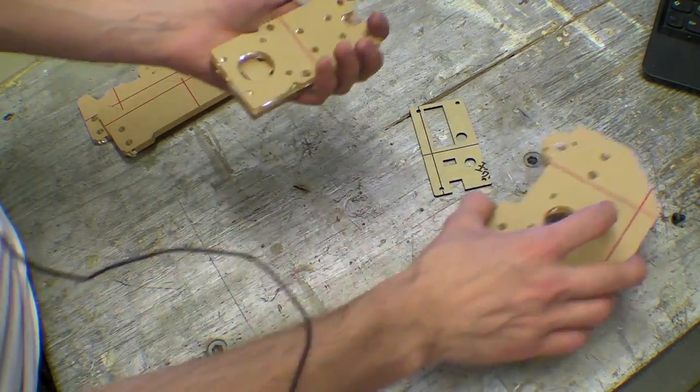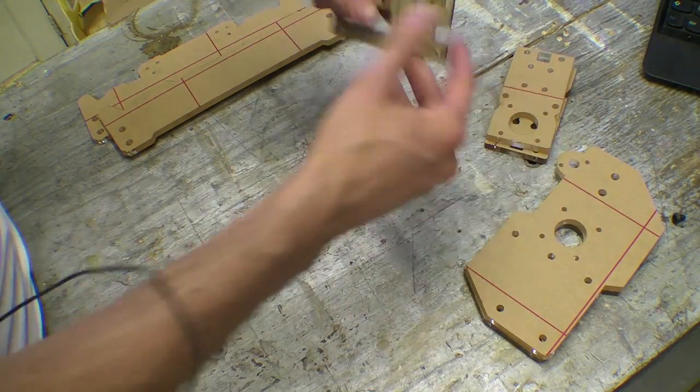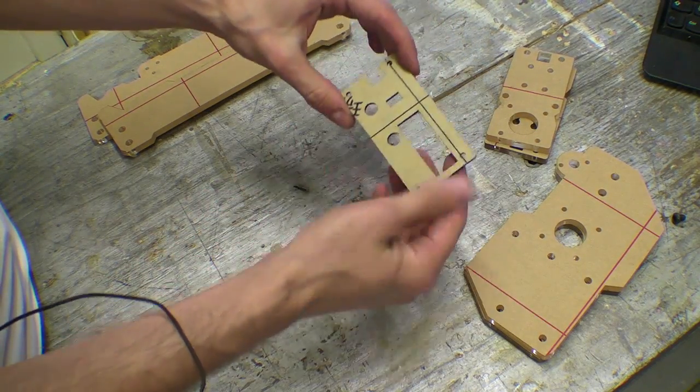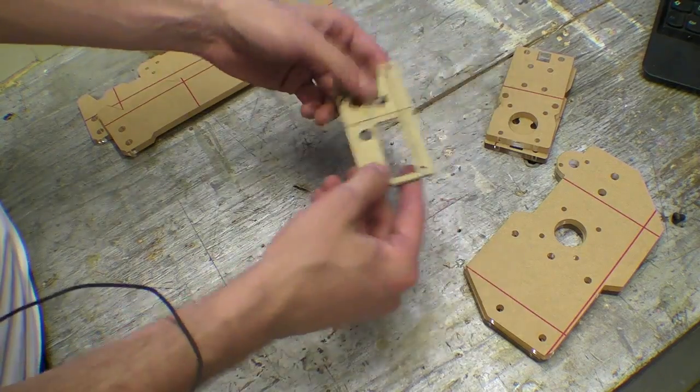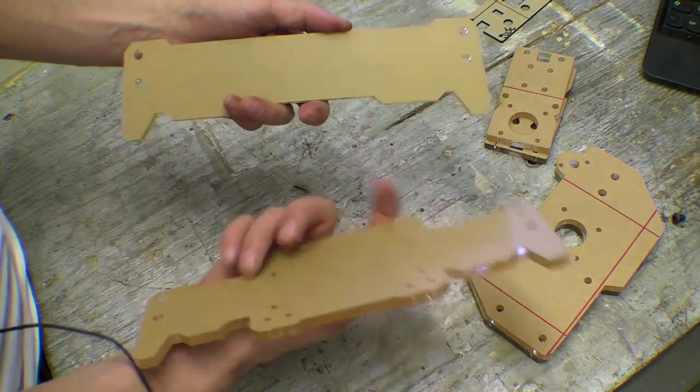I'm guessing these are the sides, this is the gantry, this is possibly to hold the controller, and this is the back and front.